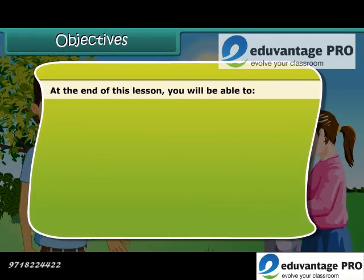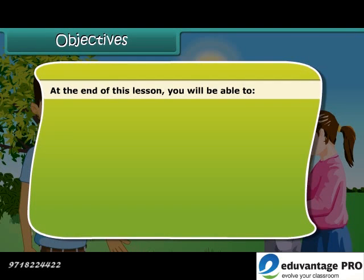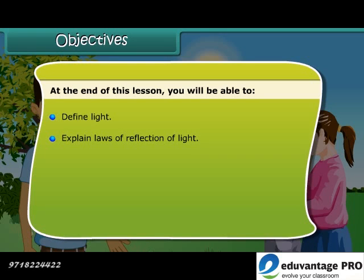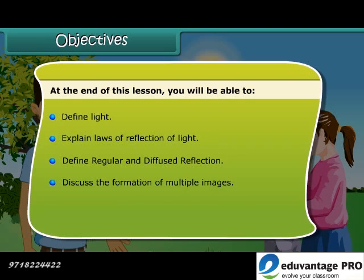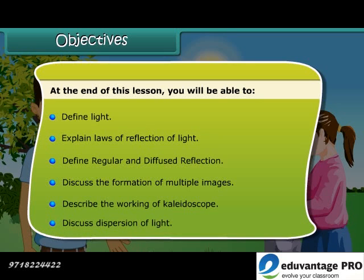At the end of this lesson, you will be able to: define light; explain laws of reflection of light; define regular and diffused reflection; discuss the formation of multiple images; describe the working of a Kaleidoscope; and discuss dispersion of light.